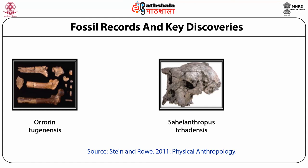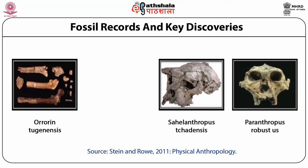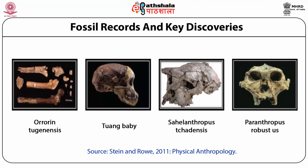The most important early hominid representatives are Australopithecus and Paranthropus, reported from several sites of the African continent. Some of the representative fossils have been very popular, such as Taung child, Lucy, and Black Skull. The fossils were divided into two categories on the basis of their robustness: gracile and robust. Australopithecus and Paranthropus show small cranial capacity, prognathous face, and thick enamel on molar teeth. Post-cranial skeleton suggests bipedal gait, though not identical to Homo. These fossils manifest evolutionary characteristics such as erect posture, bipedalism, deciduous dentition, and tough fibrous diet.